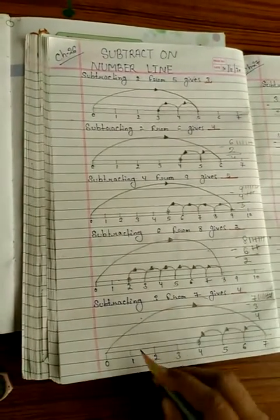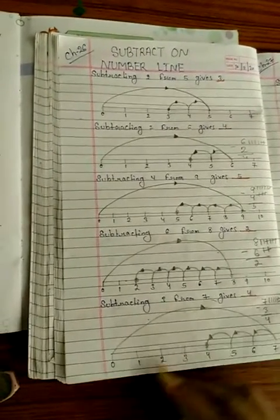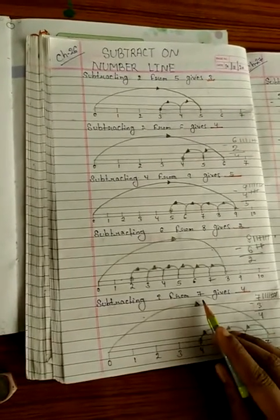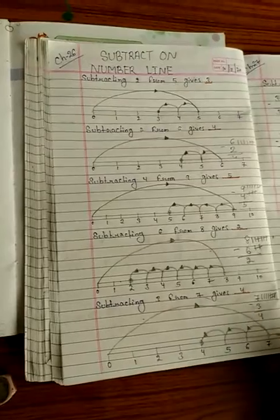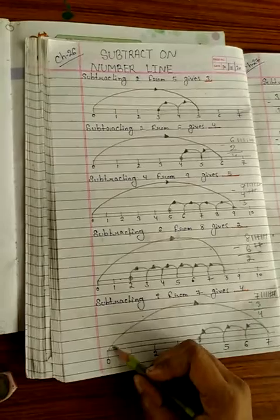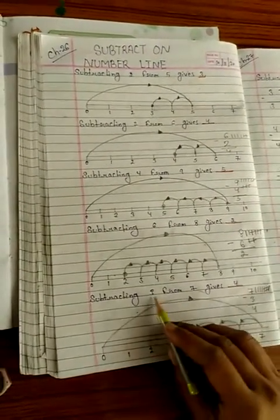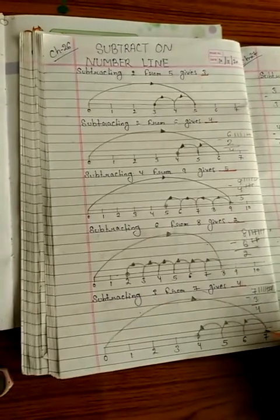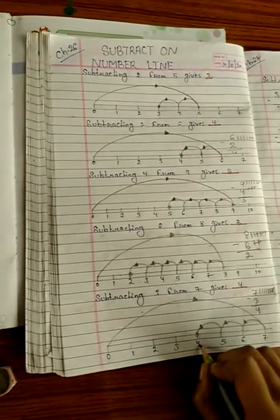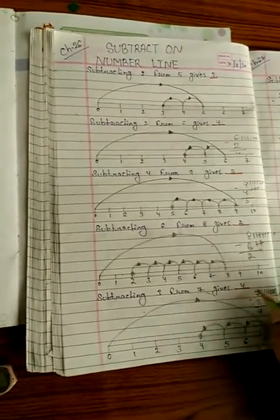So on the number line, first draw this type of one line. Your starting point is 0, draw one line — last point 7, because our question is 7 minus 3. Then back side, 3 steps: from 7, step 1, step 2, step 3. That number is 4. So the answer — 7 minus 3 is equal to 4.